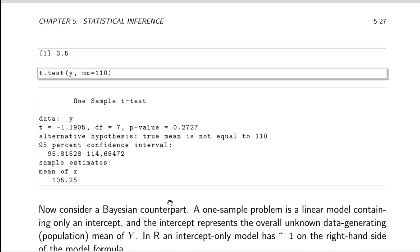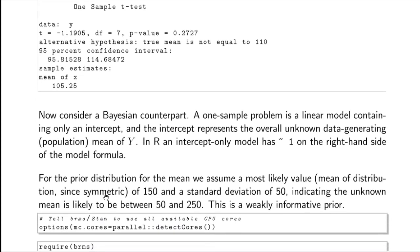Ignoring the potential for non-normality, we can do the t-test for null hypothesis mu equals 110 using R's built-in function. The t-ratio is minus 1.19 with 7 degrees of freedom (8 observations). The two-sided p-value is 0.27, making a strong normality assumption. The 95% confidence interval for the unknown population mean is 95.8 to 114.7, and the sample mean is 105.25.